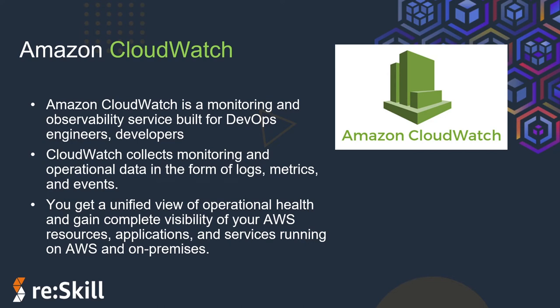Amazon CloudWatch is a monitoring and observability service built for DevOps engineers, developers, SREs, IT managers, and product owners. CloudWatch provides us with data and actionable insights to monitor our application and helps us optimize resource utilization. It collects monitoring and operational data in the form of logs, metrics, and events, giving us a unified view of our operational health and complete visibility of our AWS resources, applications, and services running on AWS and on-premises. We can detect anomalous behavior, set alarms, visualize logs and metrics side by side, take automated actions, and troubleshoot issues.